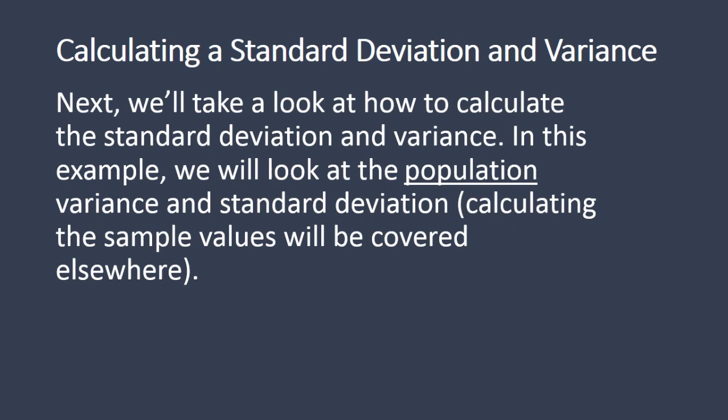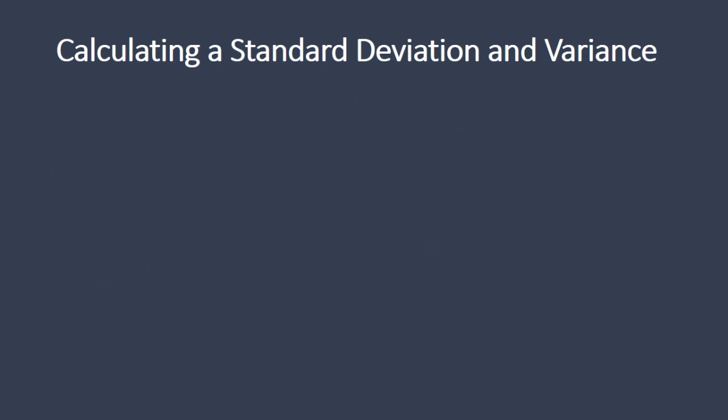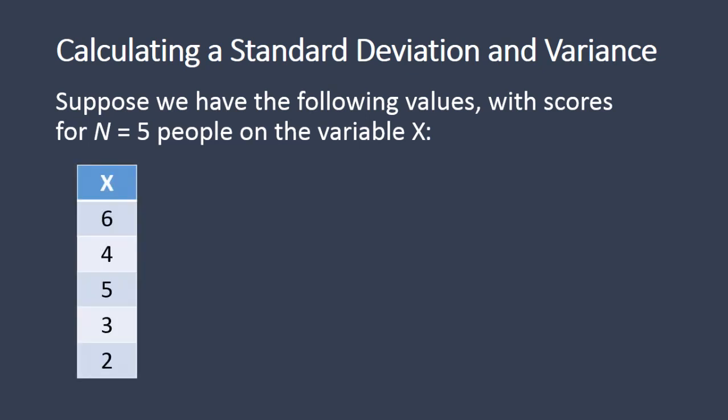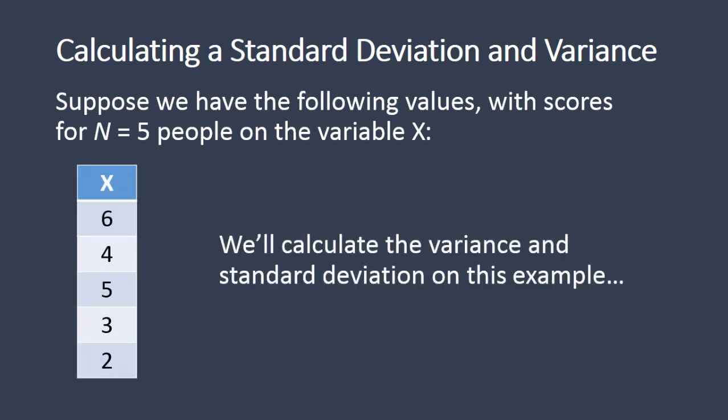Next, we'll take a look at how to calculate the standard deviation and variance. In this example, we'll look at the population variance and standard deviation — we'll calculate the sample values in another video. So suppose that we have the following values, with scores for 5 people on the variable x, and we'll go ahead and calculate the variance and standard deviation on this example.